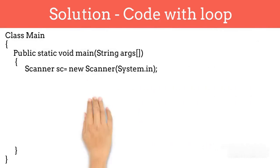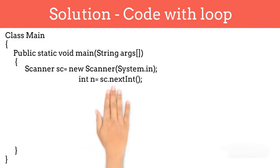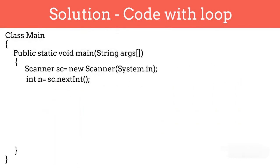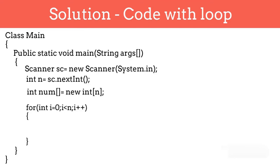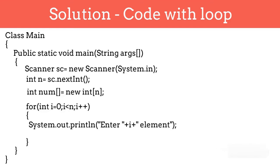To make the size of the array more flexible, we will take the size of the array from the user and save it in a variable called n. While initializing the array, instead of putting a static value, we will use this n variable. Now the user can define how many numbers they want to enter and define the size of the array. Let's write the loop from 0 to n. Inside this loop, we will take input from the user, using i as the index. We ask the user to enter the ith element, then store it at position i in the array using num[i] = sc.nextInt().